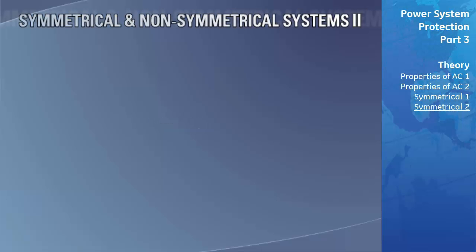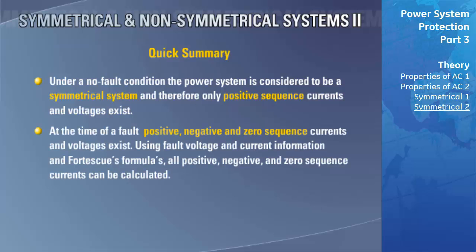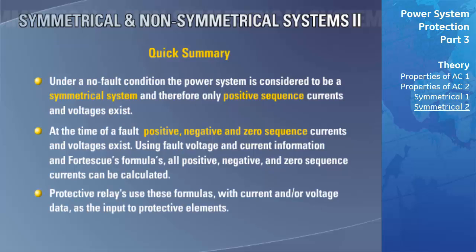To summarize: under a no-fault condition, the power system is considered symmetrical, and therefore only positive sequence currents and voltages exist. At the time of a fault, positive, negative, and zero sequence currents and voltages exist. Using real-world fault voltage and current information along with Fortescue's formulas, all positive, negative, and zero sequence currents can be calculated. The protective relay uses these formulas and real-world current or voltage data as input to protective elements. To understand Fortescue's formulas, we must first understand the A and A-squared operators.